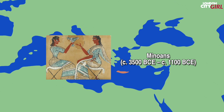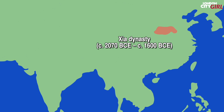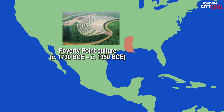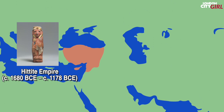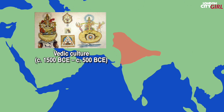In Africa the Kingdom of Kush established itself as a regional power, both a trading partner and a military rival of Egypt. In China the first of the ancient dynasties emerged, the Shia dynasty which was followed by the Shang dynasty. In North America the poverty point culture noted for its mound building tradition developed. In Mesoamerica the first major civilisation to emerge was the Olmecs, famous for creating colossal stone head sculptures. In Anatolia the Hittite Empire emerged. A volcanic eruption spelled the end of the Minoans who were replaced by the Mycenaeans. In India the Vedic culture evolved and the foundations of Hinduism were laid and a hierarchy of social classes was established.